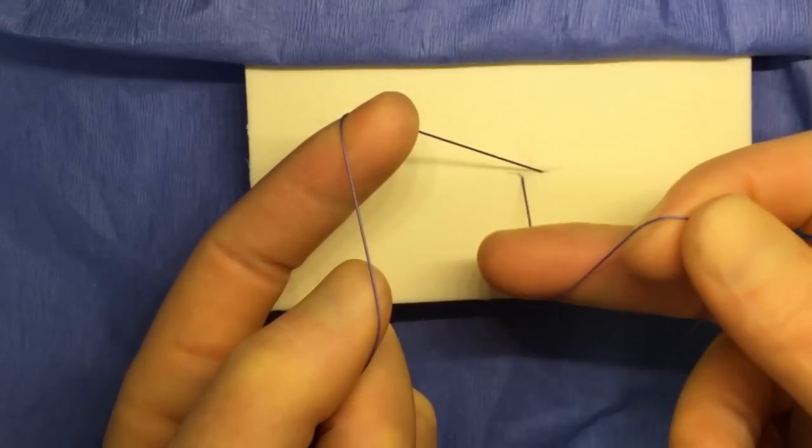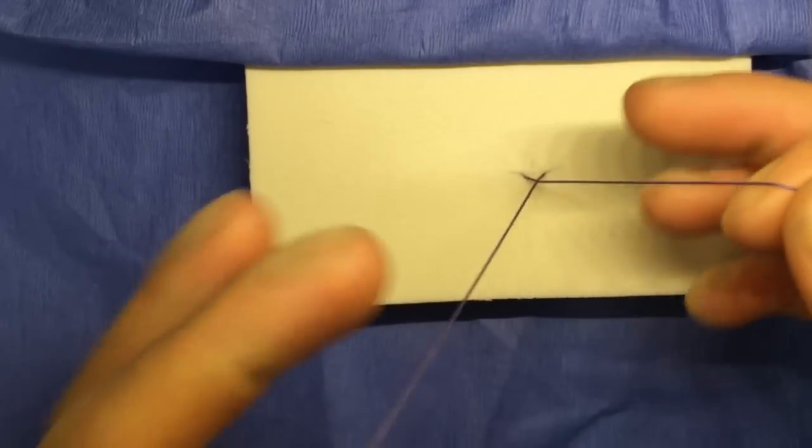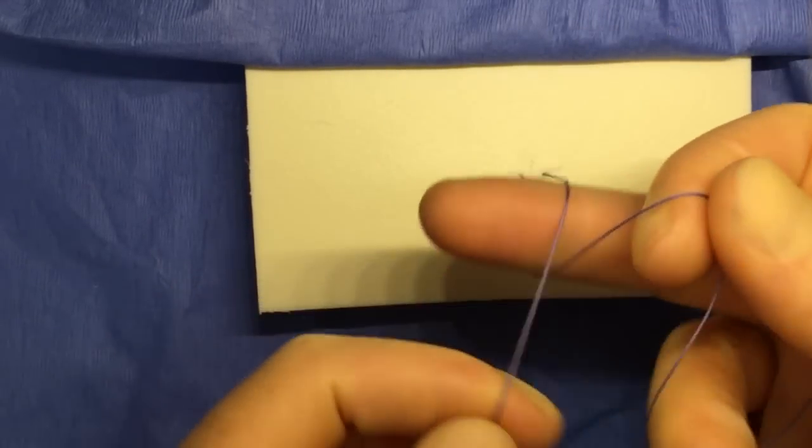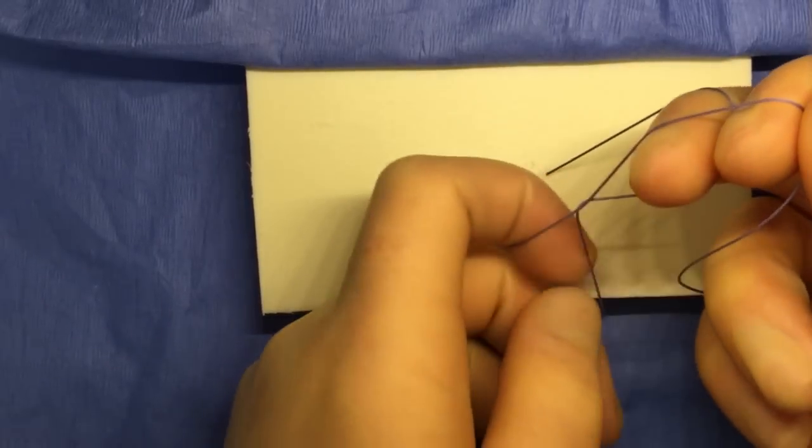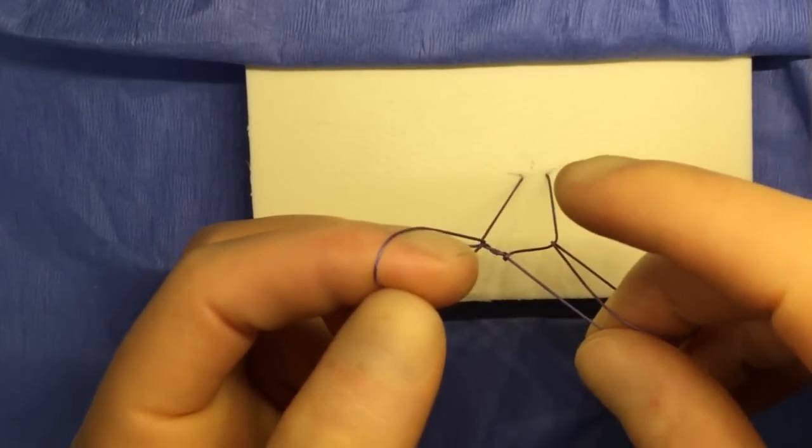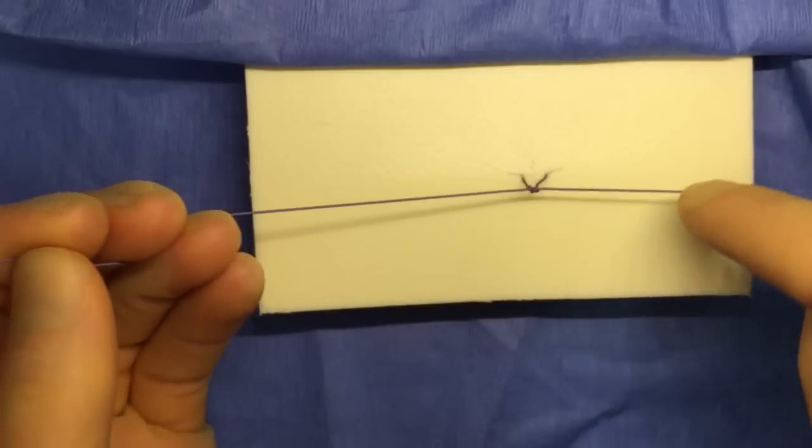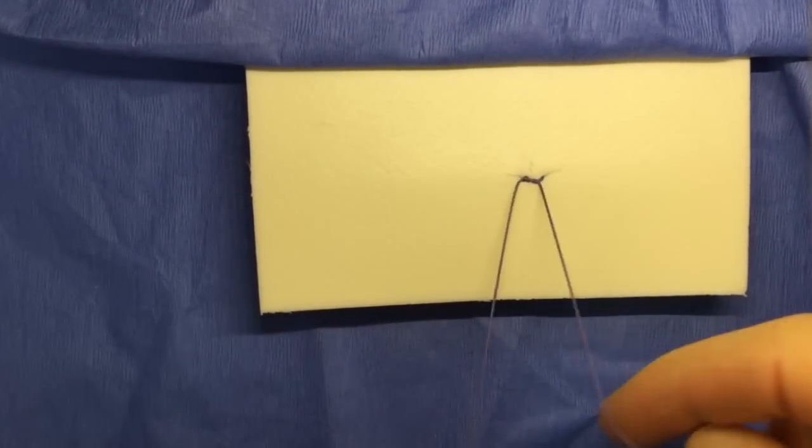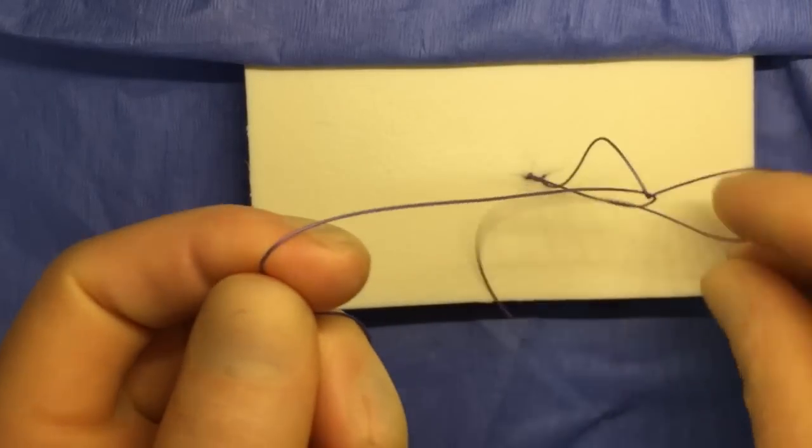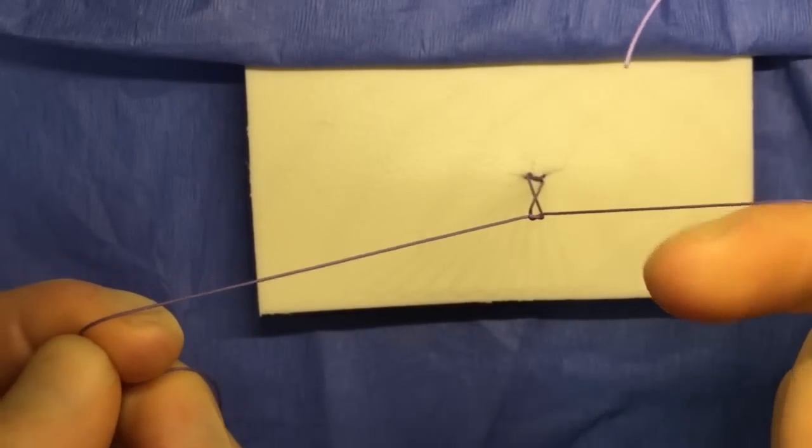Putting these together at the same time, again, pulling towards yourself with the right hand, pulling away from yourself with the left hand. A right-handed and a left-handed knot simultaneously, pulling away from yourself, and then that enables you to lay it down. Then you can finish the knot as you see fit.